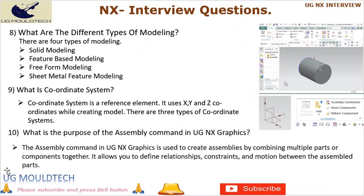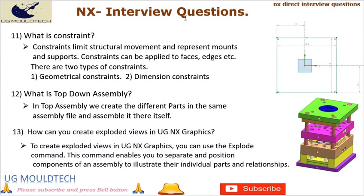Question 11: What is a constraint? Constraints limit structural movement and represent mounts and supports. Constraints can be applied to faces, edges, etc. There are 2 types of constraints: 1. Geometrical constraints, and 2. Dimension constraints. Constraints are used to define and maintain relationships between different elements. In UGNX, constraints can be applied to various types of geometry such as lines, arcs, circles, and points. They help maintain the desired relationships between these elements, even when modifications are made to the model.